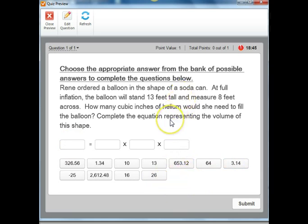But before we get to doing that let's just go ahead and read our question. So it says choose the appropriate answer from the bank of possible answers to complete the question below. So Renee ordered a balloon in the shape of a soda can. At full inflation the balloon will stand 13 feet tall and measure 8 feet across. How many cubic inches of helium would she need to fill the balloon? Complete the equation representing the volume of this shape. So not exactly like the problem but very similar to the problem that we just looked at.